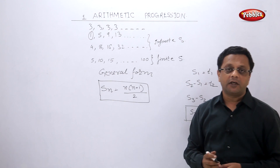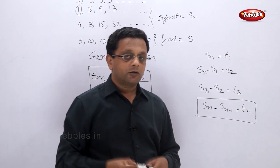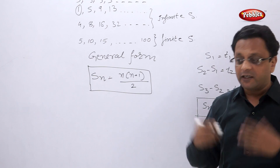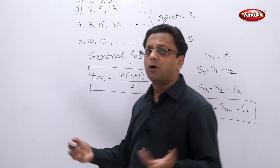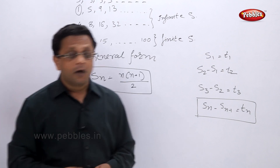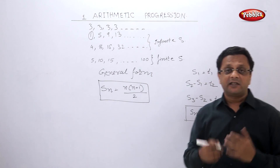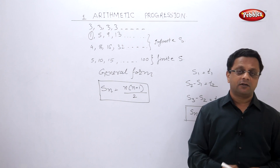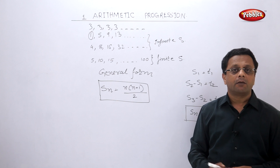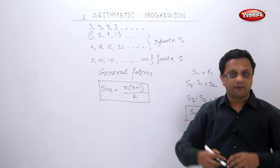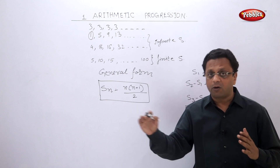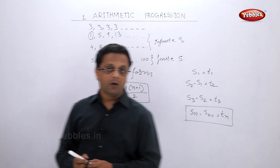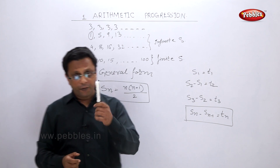Numbers can be repeated in a sequence, but in sets, numbers are not repeated. Also, the elements of a sequence are always in a specific order, whereas in sets, numbers need not be in a specific order. A sequence is also a set of numbers, but it is a series — not just a collection of numbers. They have a specific order and follow a specific rule.